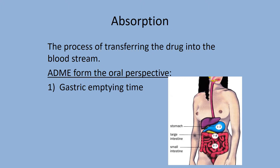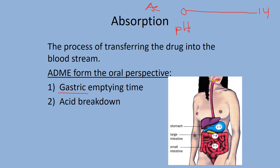Absorption is the process of transferring a drug into the bloodstream. Factors affecting it include gastric emptying time — if the drug stays in the stomach, it isn't getting into the blood. Acid breakdown is also a factor: the stomach pH is 1–2, so there's significant acid breakdown there. The small intestine is closer to neutral pH, which is better for absorption.